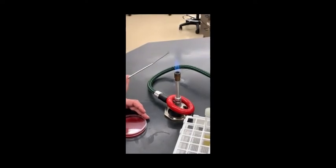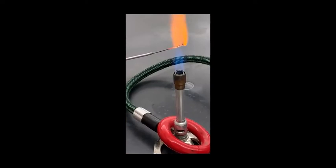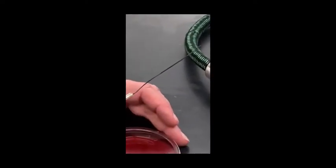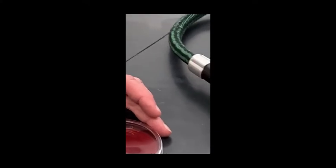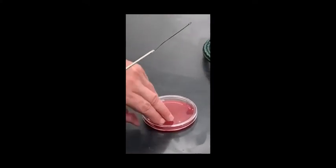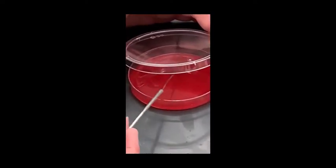Flame your loop again and allow it to cool. Rotate your plate again. Overlap area two and extend those streaks into the third quadrant on that plate.